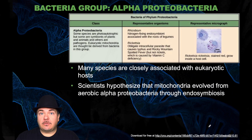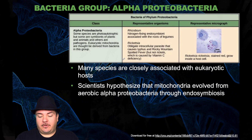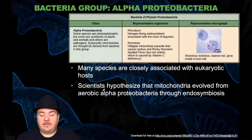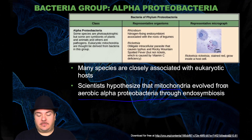Now let's get into the bacteria domain. The first group is the proteobacteria, made up of five classes. The first is the alpha proteobacteria. Many species are closely associated with eukaryotic hosts. Notably, scientists hypothesize that mitochondria evolved from aerobic alpha proteobacteria through endosymbiosis.